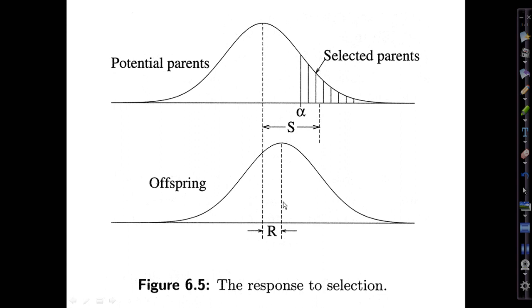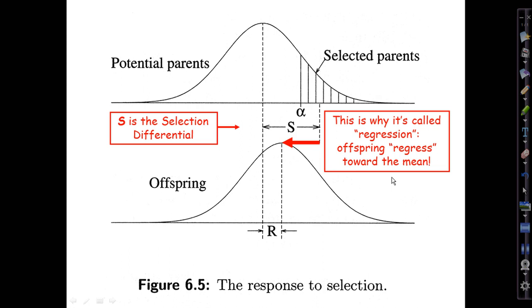The response to selection is then the difference between the mean of the resulting offspring population and the original parental population, so it's the amount by which we moved the mean of this population by performing selection. S is called the selection differential, and R is the response to selection. This movement that the breeders were well aware of, this tendency of the response to be disappointingly less than the selection differential, is why the regression slope ended up being called a regression.